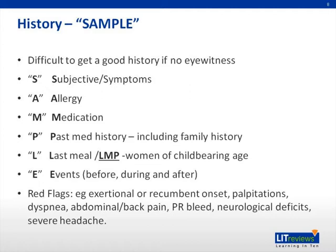M for medication is important because many medications are implicated in syncope, especially drugs which have vasodilatory effects. Commonly used drugs which are implicated include anti-anginals, nitrates, and antihypertensives. They predispose to orthostatic hypotension by reducing blood pressure. Other drugs include beta blockers, antiarrhythmics, and digoxin, which can affect cardiac output. Drugs of abuse such as alcohol and cocaine may also produce syncope by altering sensorium.